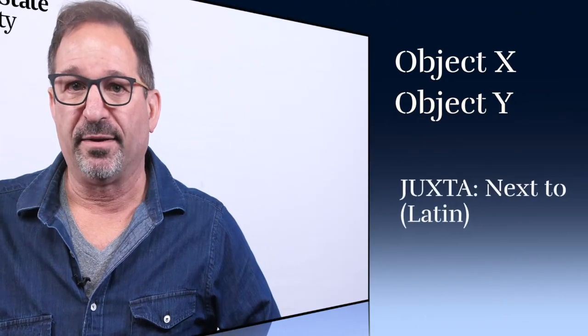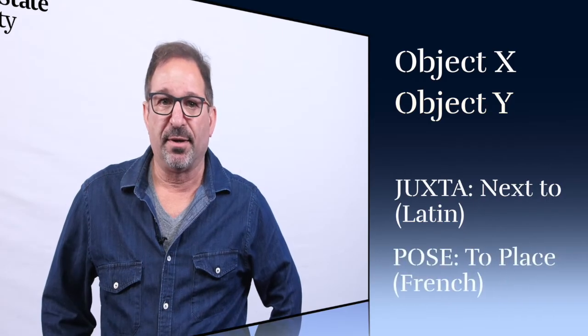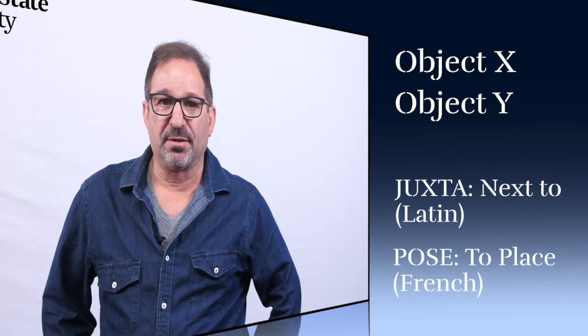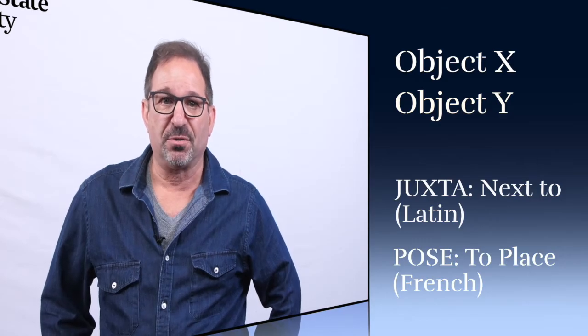In literature, one way that writers and readers find pleasure is when those things are juxtaposed. Now, juxtaposition doesn't mean exactly that this thing and that thing are opposites. The etymology of juxtaposition from Middle English, from Latin and French, essentially means to position object X near object Y. Juxta — that's Latin for next to — and pose, as in to place, to place next to, to juxtapose.